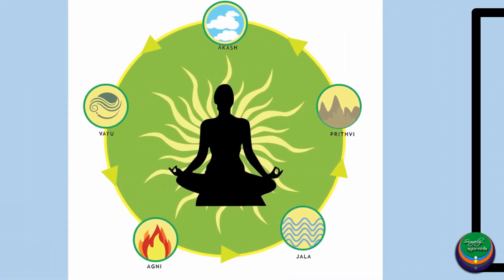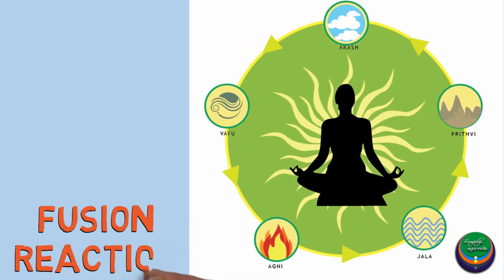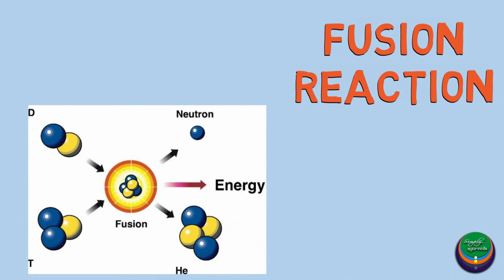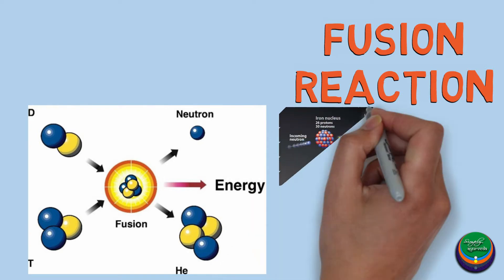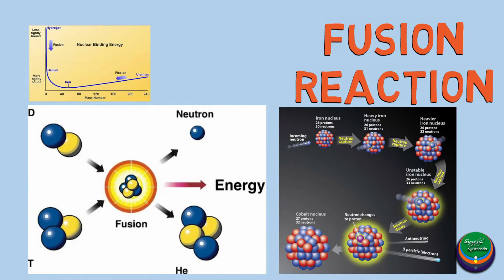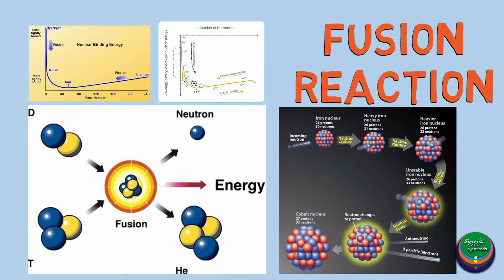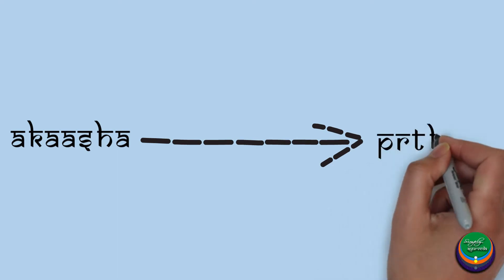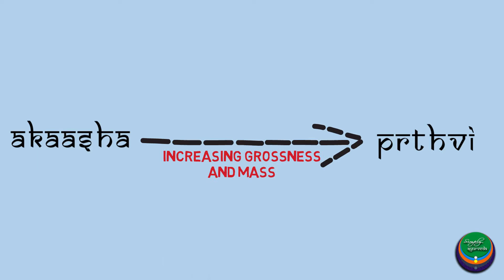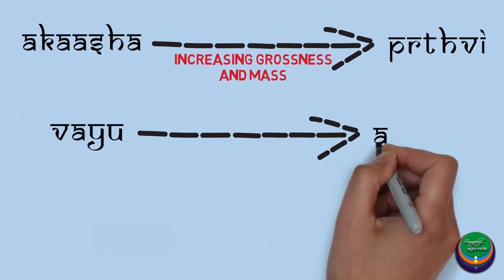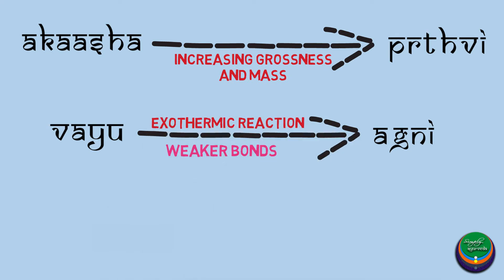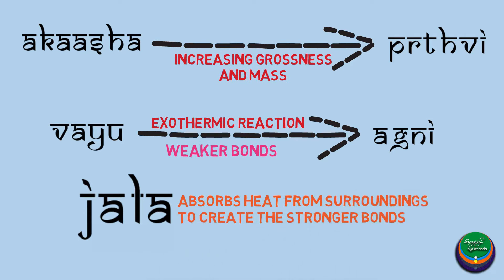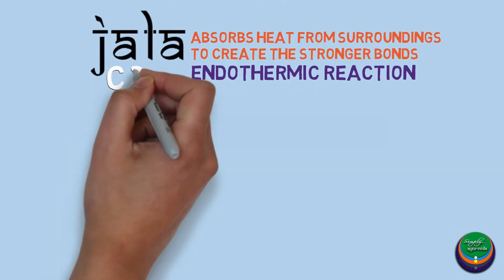The complete dynamics of the conversion of Akasha to Prithvi indicate a fusion reaction. A fusion reaction is an energy-releasing reaction wherein two subatomic particles fuse into a larger one. Fusion of lighter nuclei releases energy, which is an exothermic reaction, while fusion of heavier nuclei requires energy for atomic bonds to form, which is an endothermic reaction. Applying this to the Mahabhutas: from Akasha to Prithvi, the Sthulatha and Ganatha of the Bhutas increase. The conversion of Vayu to Agni is an exothermic reaction because these are more subtle. But since the bonds of Jala are stronger and the entity is more stable, it absorbs heat and energy from the surroundings, indicating an endothermic reaction, which makes Jala cold.